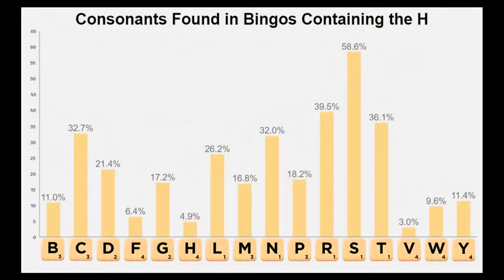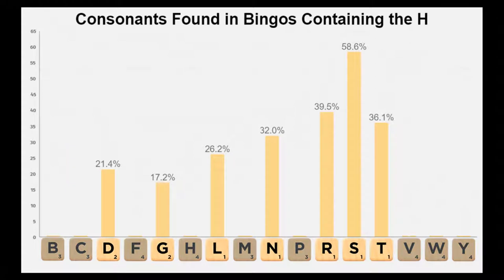Now let's look at how the consonants mesh with the H, beginning with bingos. The low-point consonants are all relatively well represented in bingos containing an H, although the L and the N lag behind the R and the T.